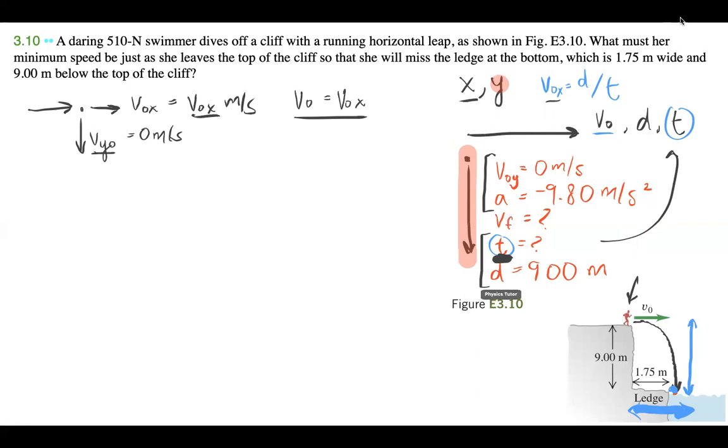The equation that I'm going to be using is d is equal to v-naught t plus half of v-naught t squared. I'm just going to plug in my values and I notice this v-naught is equal to zero.